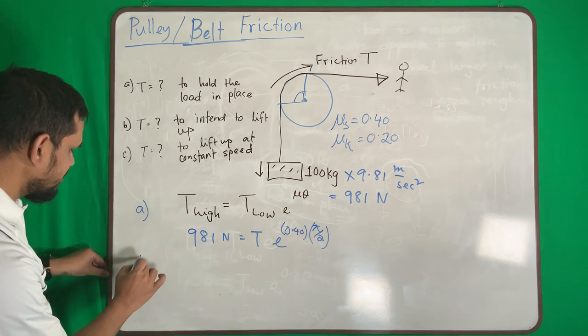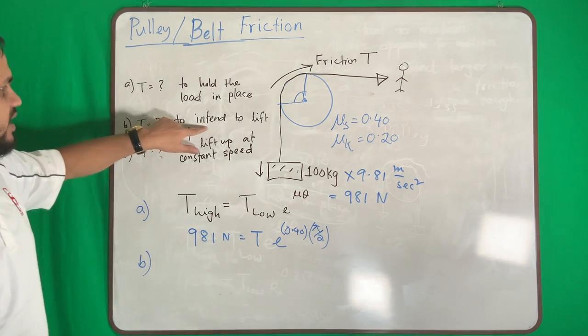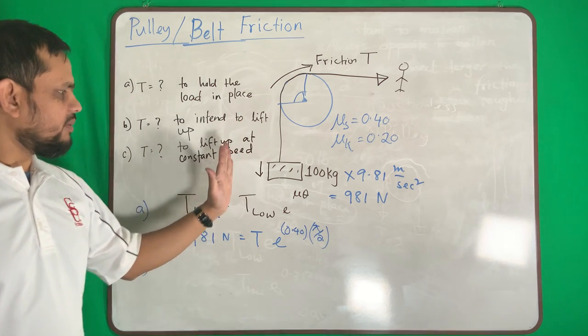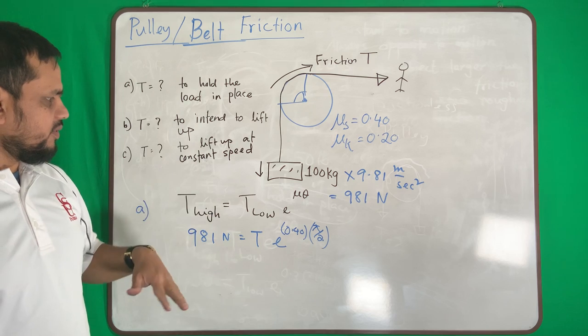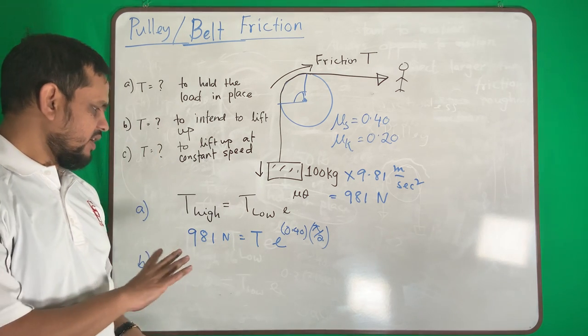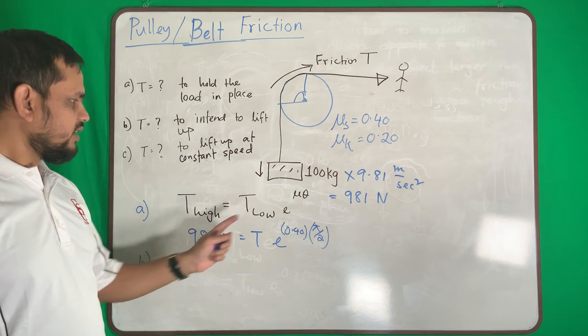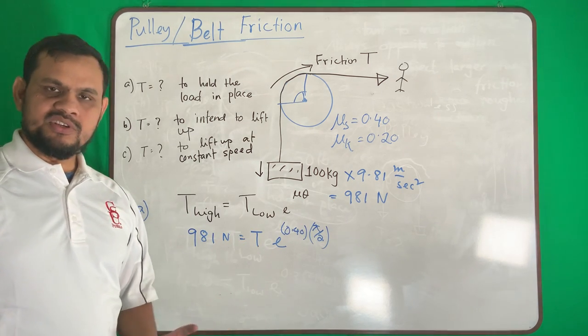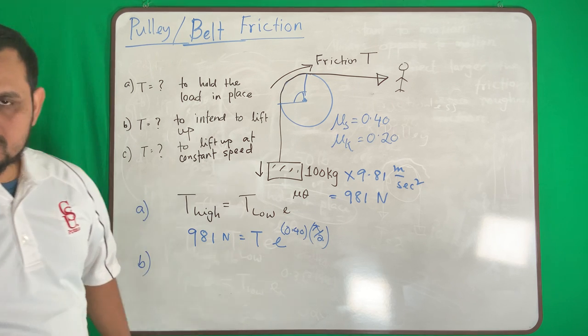Now I will do number two: to intend to lift up, the body will go up. Before starting B, take a pause and make sure that you understood. That 981 is my T high, this will be T low. So it is very important to identify which one is low, which one is high.